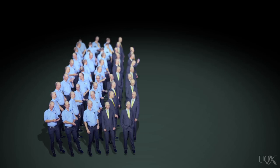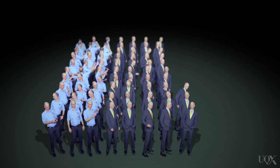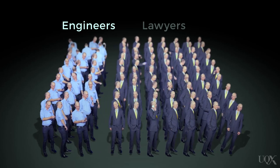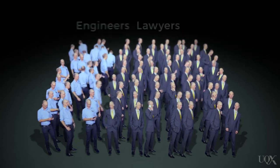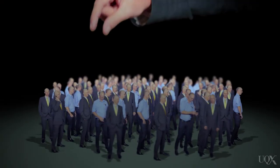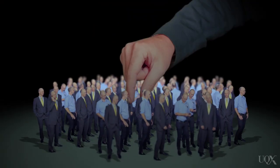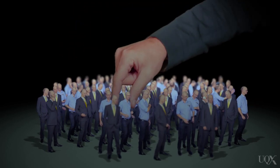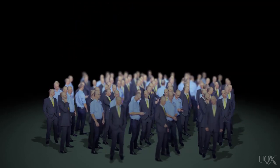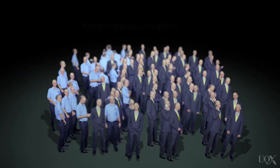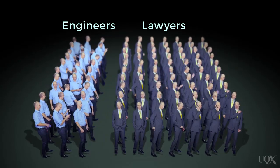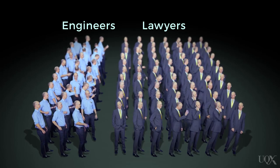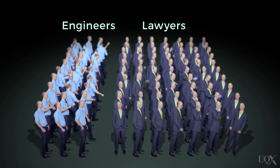Perhaps if I ask the question slightly differently. Imagine that we put all of the party-goers into a giant bag, so that we've got 30 engineers and 70 lawyers all jumbled up in a big bag, and I reach in and carefully grab one of them. Is it more likely that I've grabbed an engineer or a lawyer? Hopefully you can see that it is more than twice as likely that I've grabbed a lawyer — there are 70 of them compared to 30 engineers.